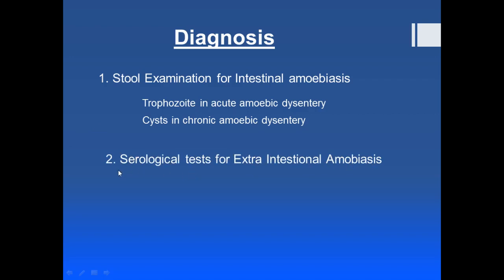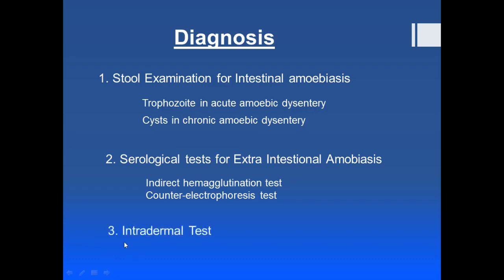For extra-intestinal amoebiasis diagnosis, serological tests are used — mainly the indirect hemagglutination test, which gives a positive result for infected people, and the counter electrophoresis test. Additionally, an intradermal test can be used: antigen is taken from cultured Entamoeba histolytica, and 0.1 ml of that antigen is injected intradermally. In an infected person, erythema will occur within three hours, indicating infection.